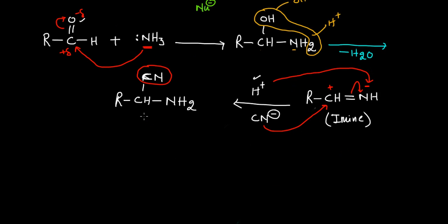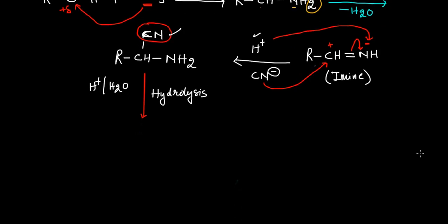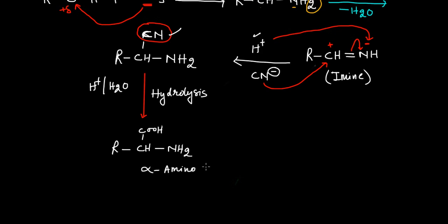Finally, we do the hydrolysis. The CN group is hydrolyzed and converts into the COOH group. We get R-CH(NH₂)(COOH) — that is our desirable alpha amino acid. We obtain this alpha amino acid by Strecker synthesis.